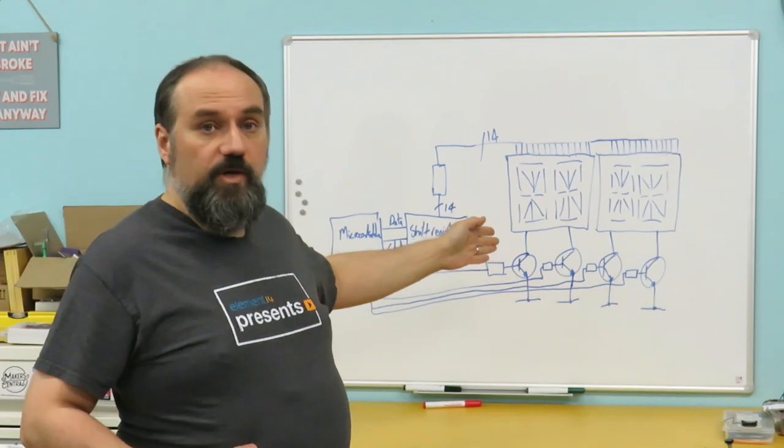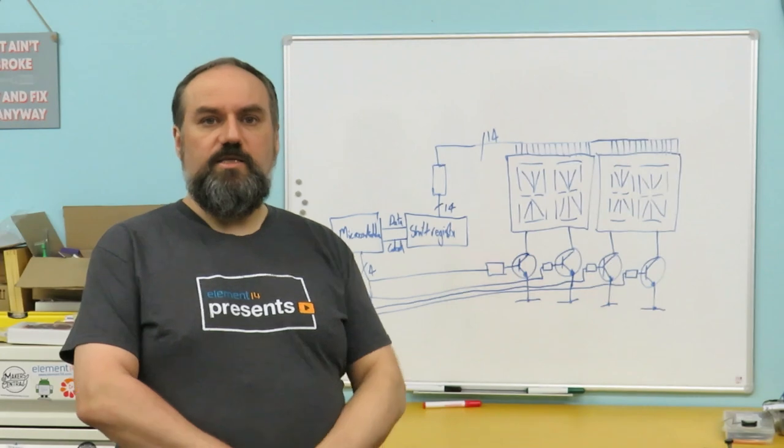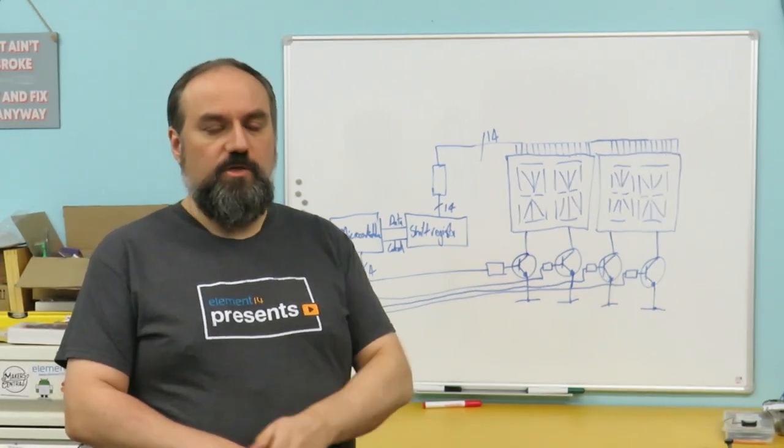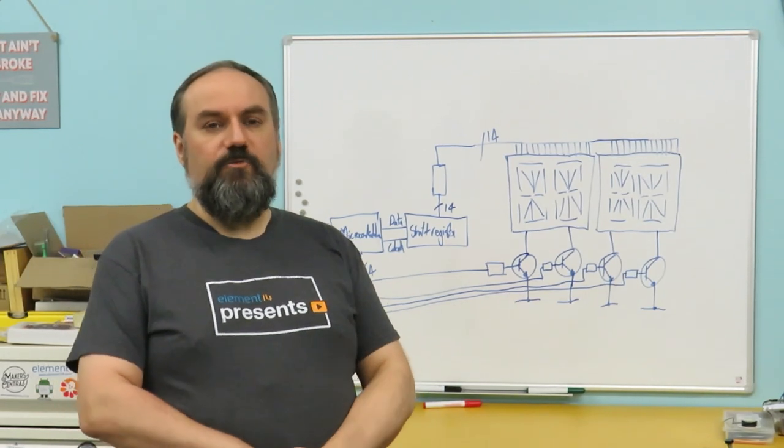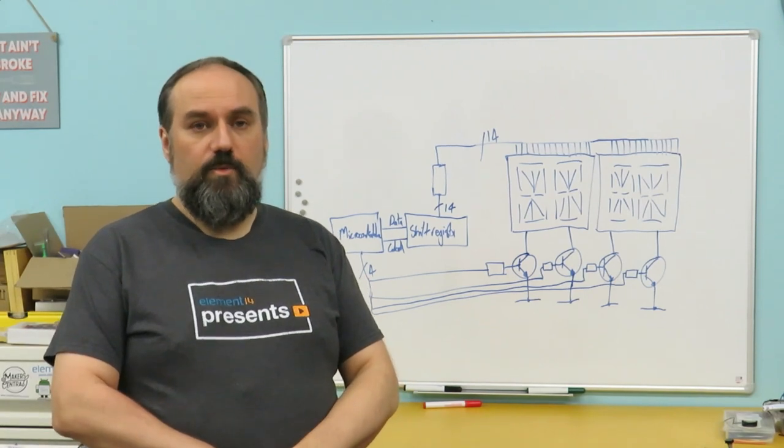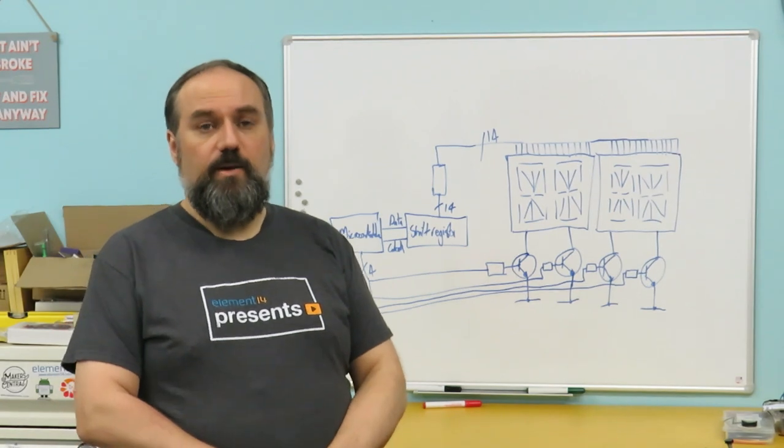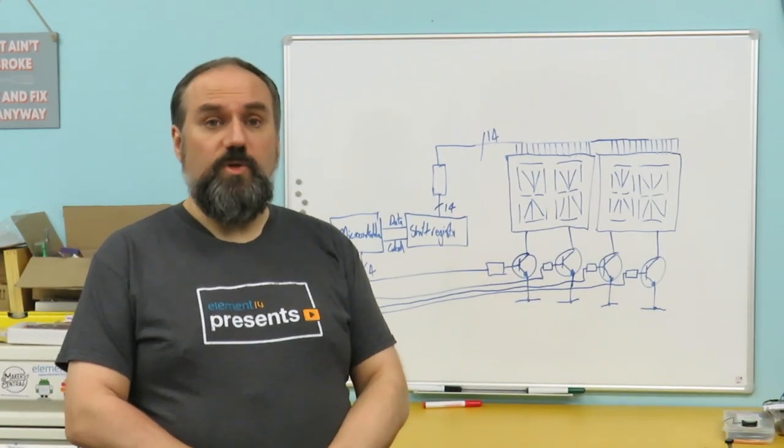We then repeat that. Send new data through the shift register and we turn on just the second digit. And then we send more data and we turn on just the third digit. And we send more data and we turn on just the fourth digit. And if we do that fast enough what we'll find is that the appearance of the display, it looks like all four digits are lit up at the same time. So this is a technique called multiplexing.